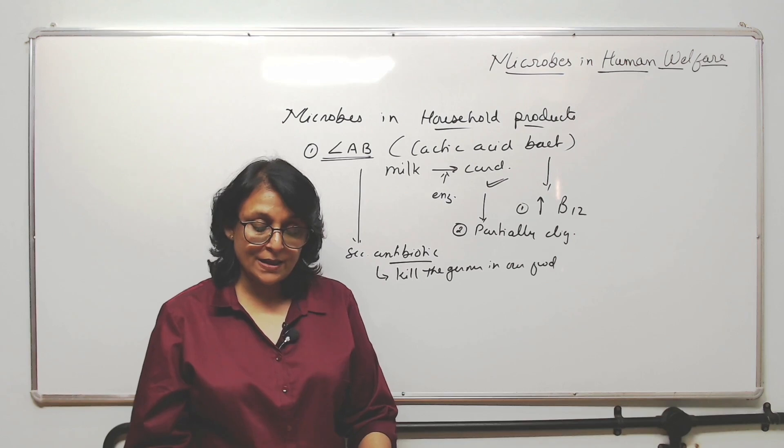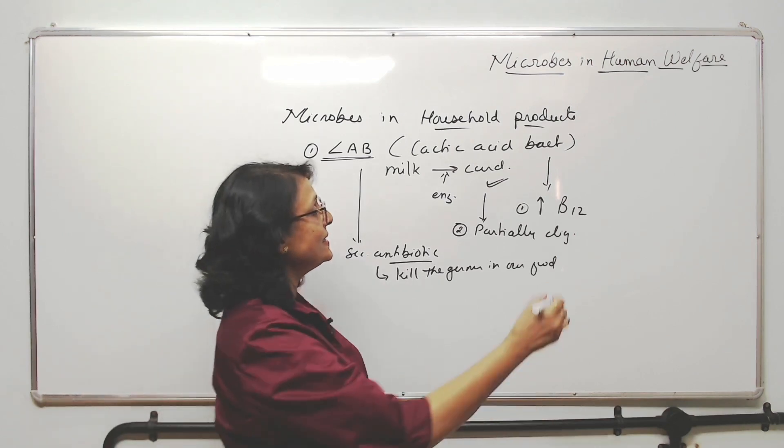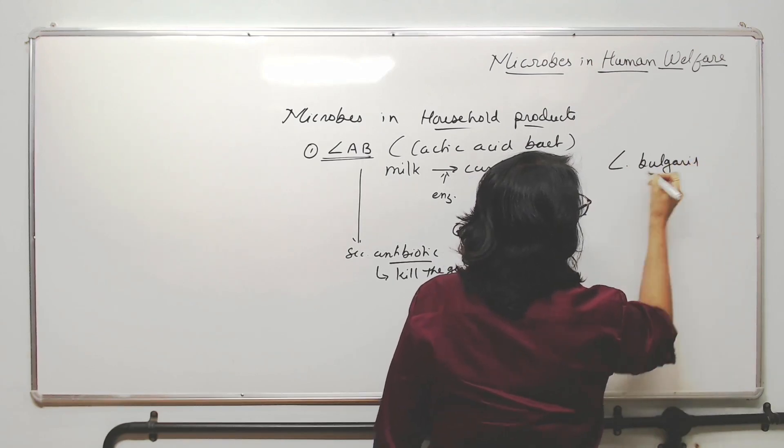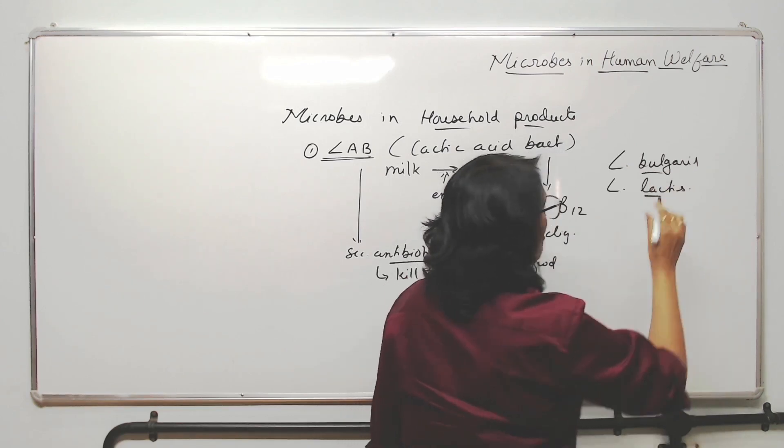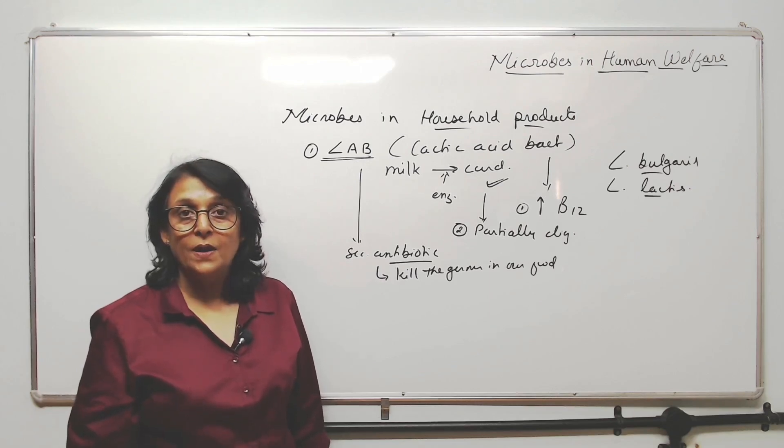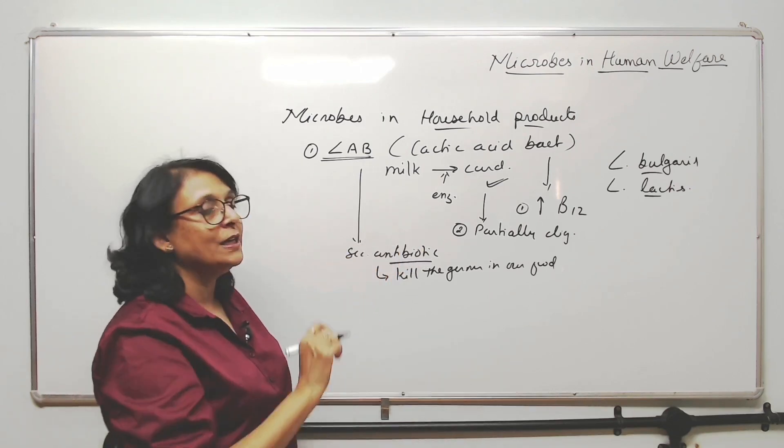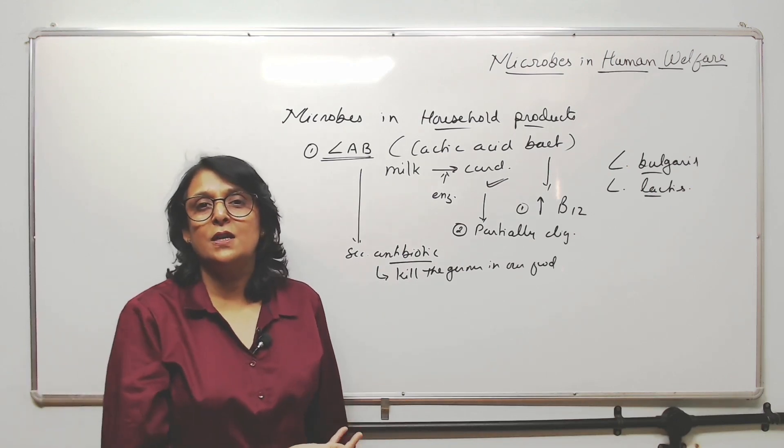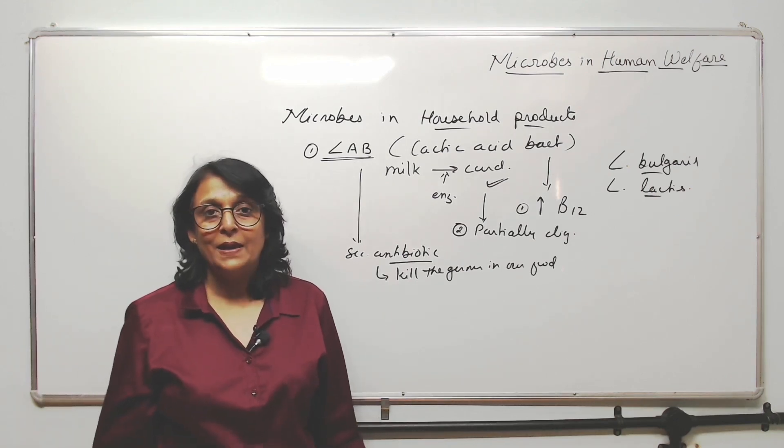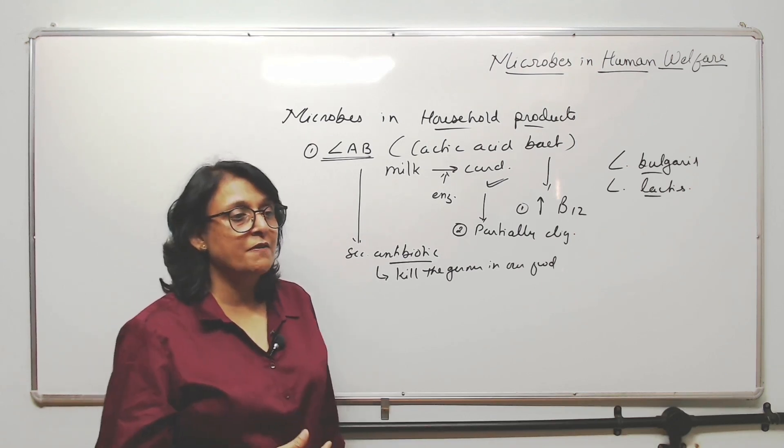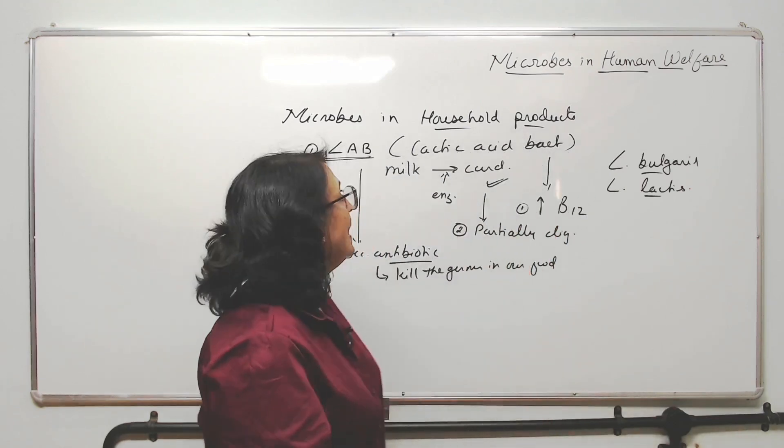Lactobacillus lactis, Lactobacillus bulgaris - these are some important lactic acid bacteria. LAB is a name given to the group, not to the individual. These are the individual bacteria. They help in curd formation and we have been using this in our house almost every day, which is very beneficial for our alimentary canal.